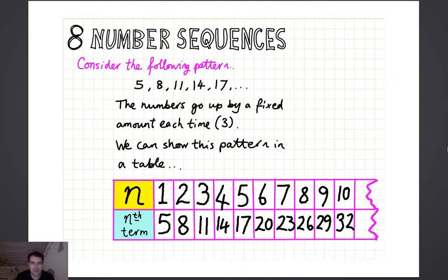This is MYP3 Unit 2 Chapter 8, it's called Number Sequences, and it's all about finding a rule for a pattern of numbers.